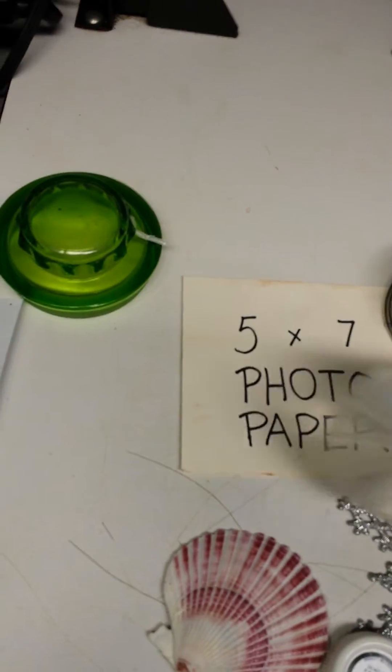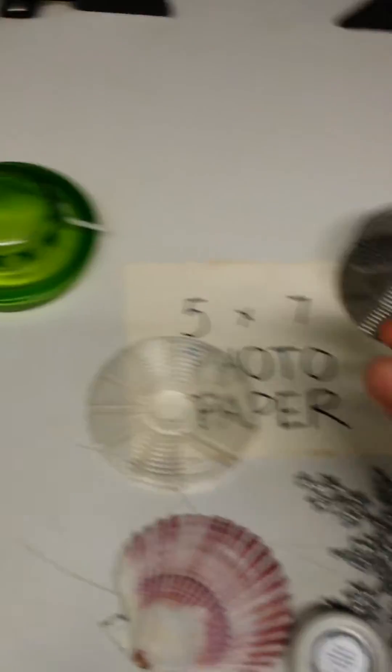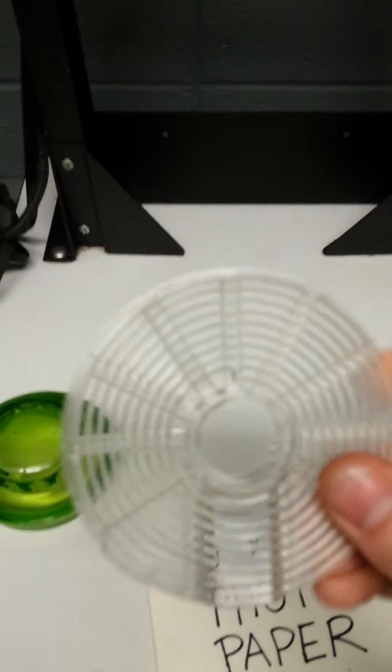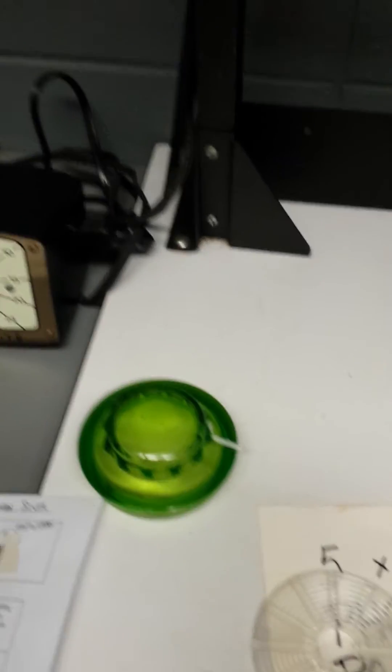And the idea behind this is that when you make a basic photogram, you're just laying objects down on top. And obviously, if it's translucent like this, light's going to shine through to a certain extent. So you can get some really interesting effects. Whereas if it's opaque like this,